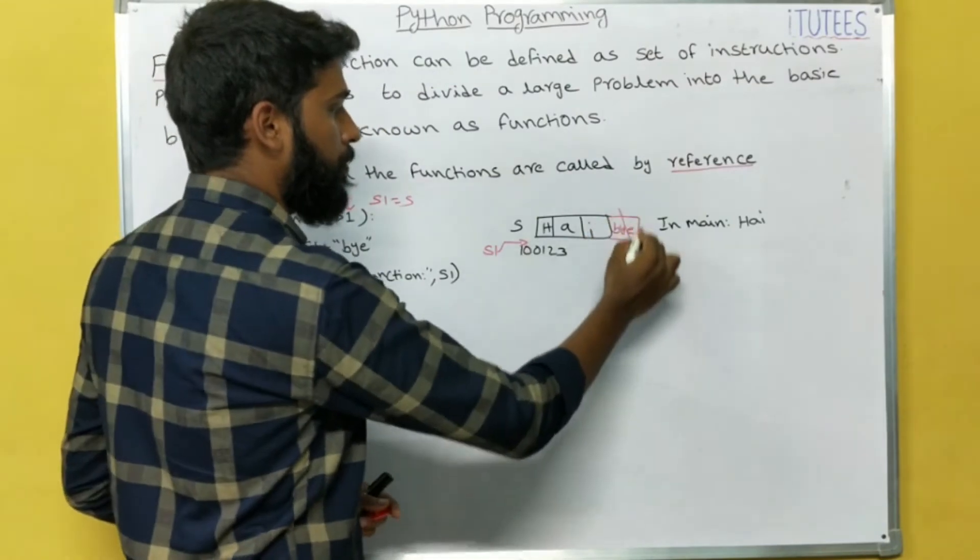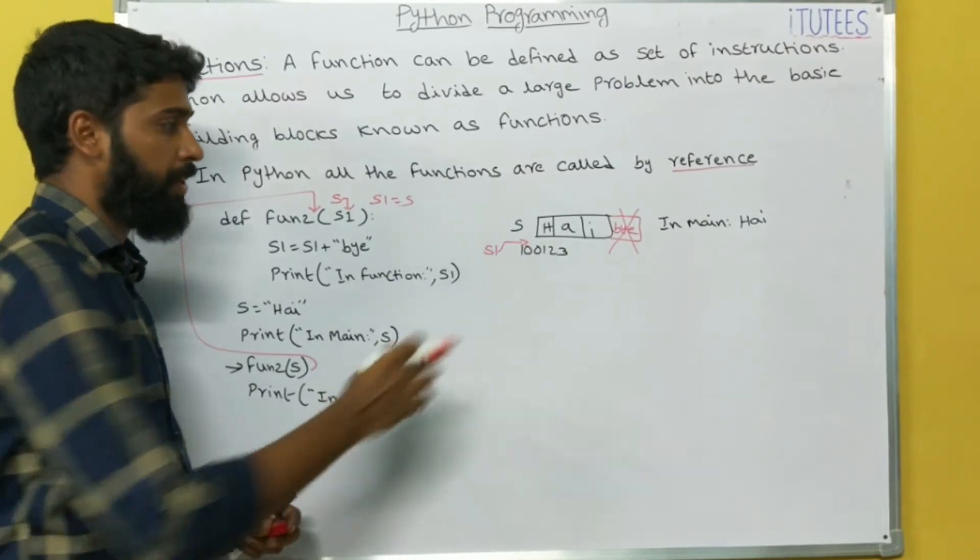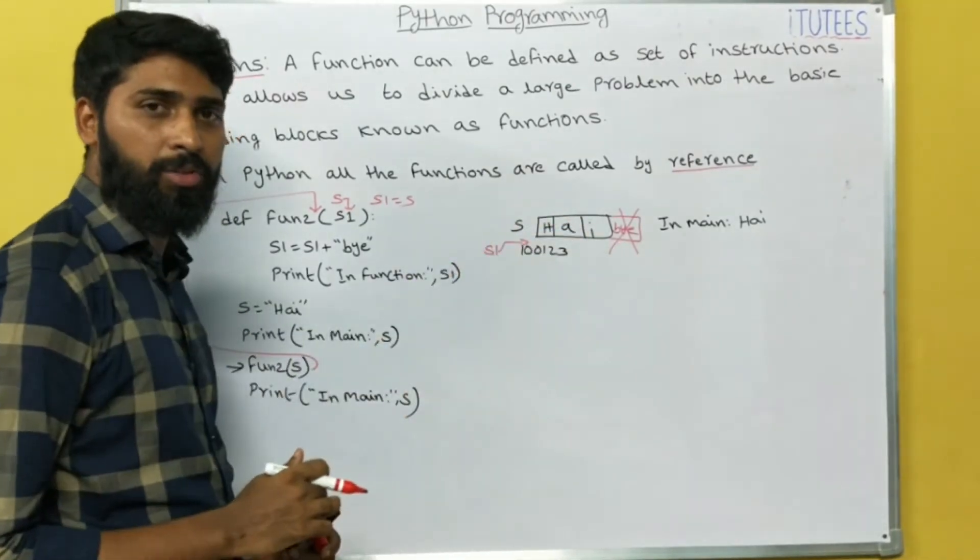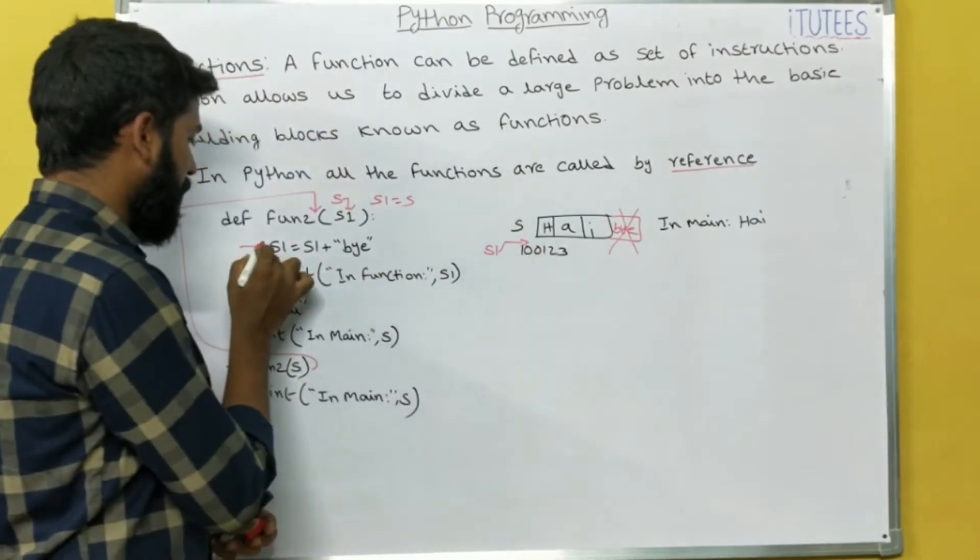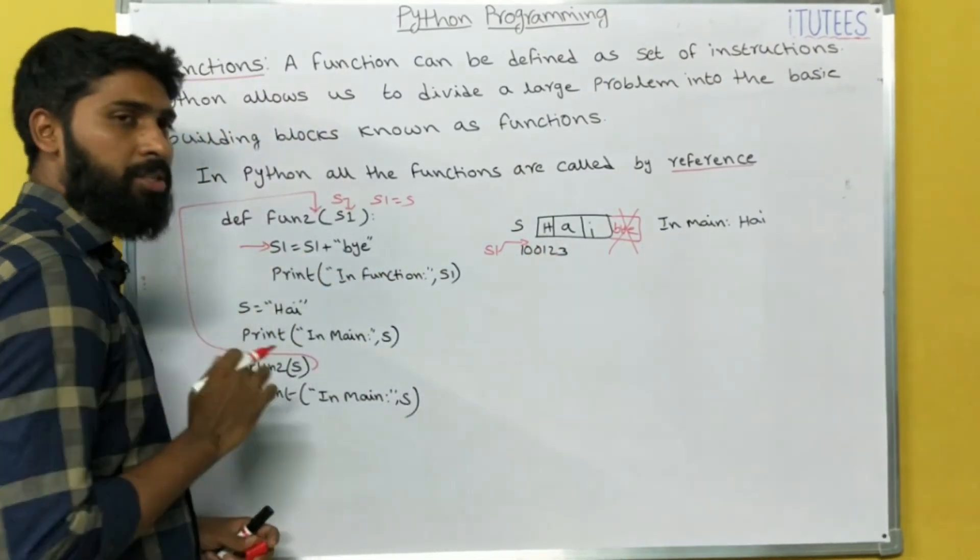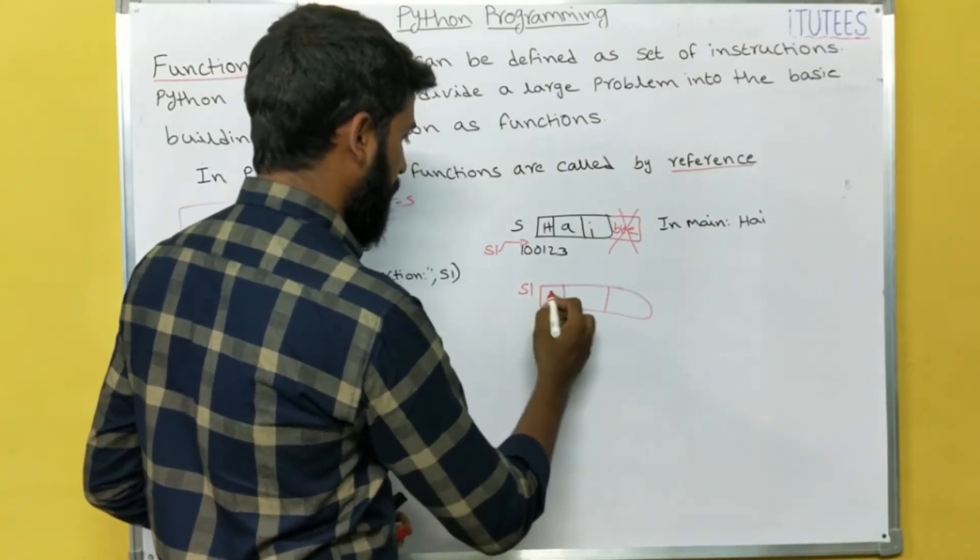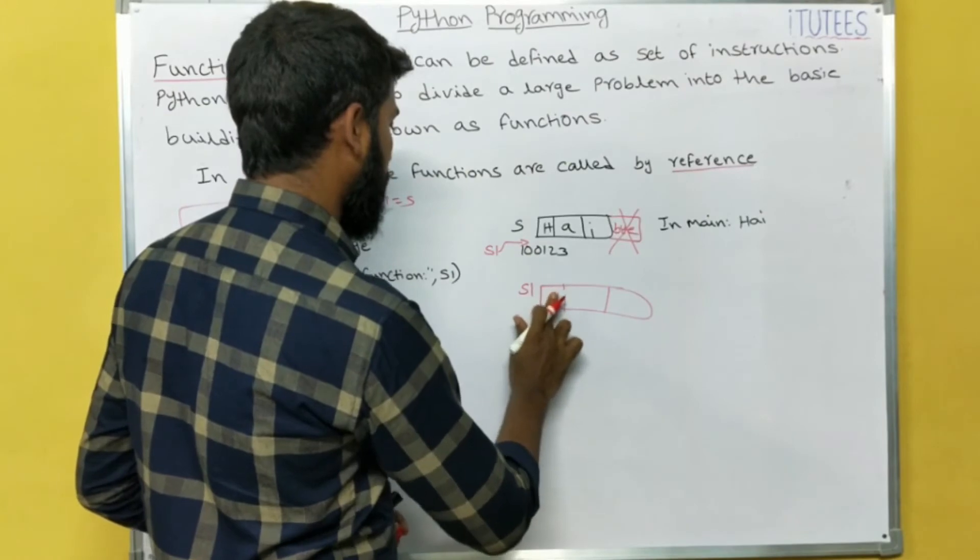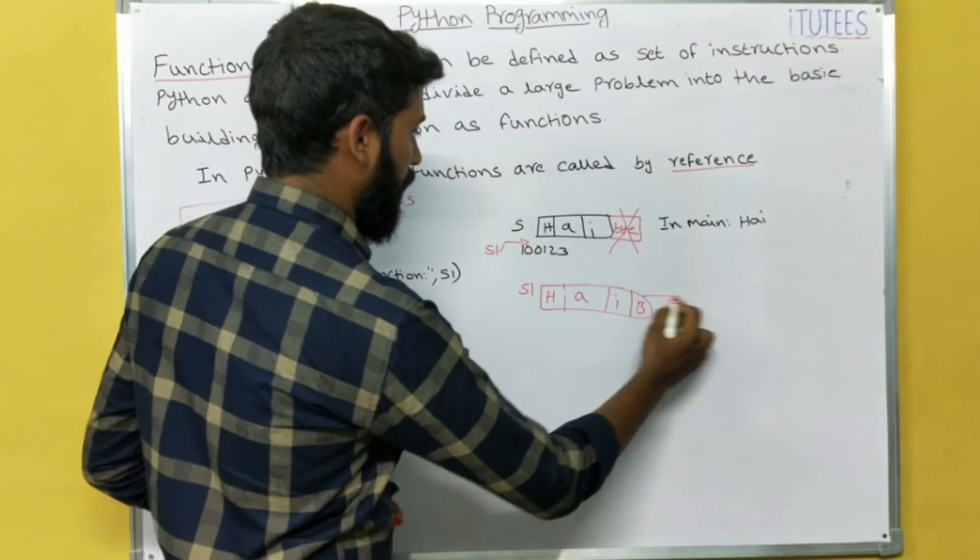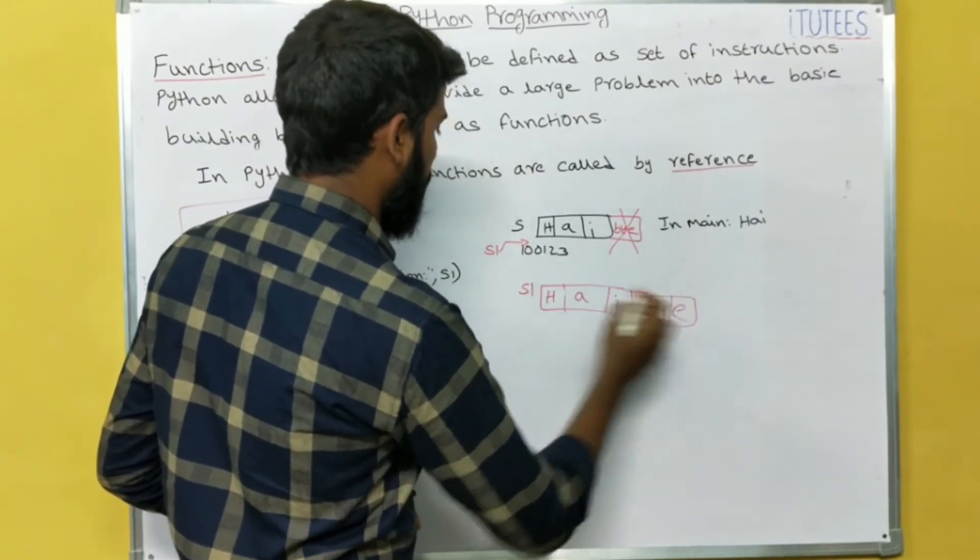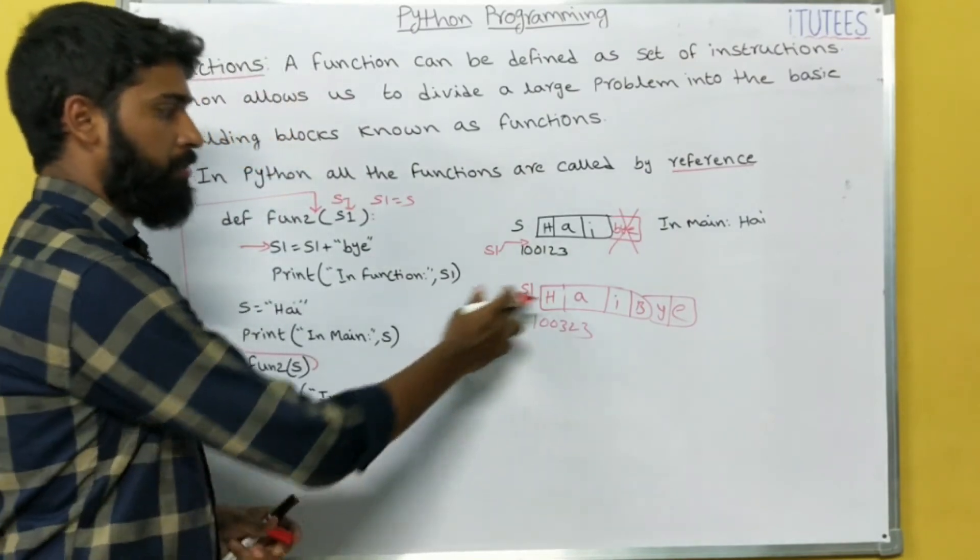So after this instruction, at this instruction S1, S1 created in this story. What is the S1? High. From this I am going to add by. Now it have another address. So S1 high by. I hope you understand. So now it prints what, it prints in function. In function, what is the S1? High by.